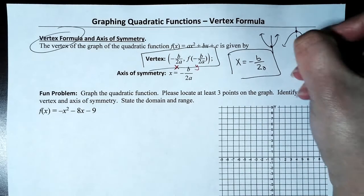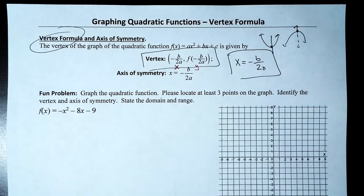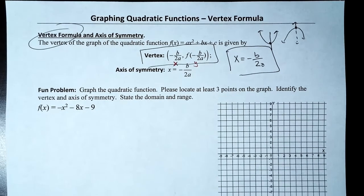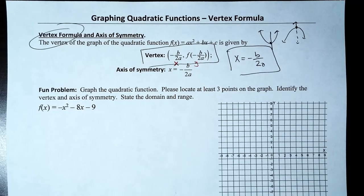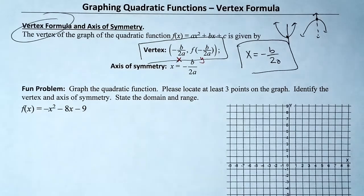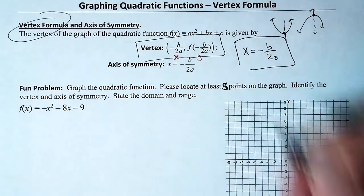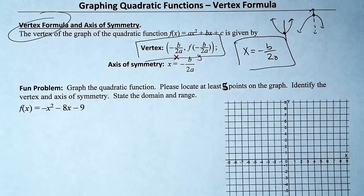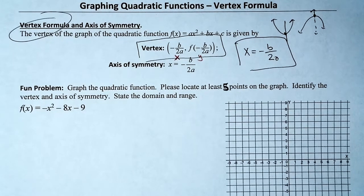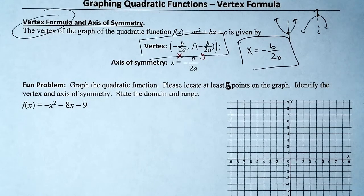The problem reads: graph the quadratic function. Please locate at least five points on the graph, identify the vertex and axis of symmetry, and state the domain and range.